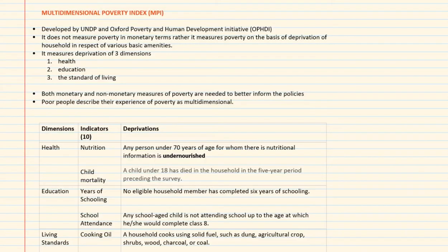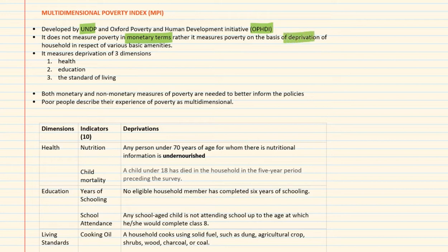In this lecture we will study the Multidimensional Poverty Index. It is developed by the United Nations Development Programme and Oxford Poverty and Human Development Initiative. It does not measure poverty in monetary terms; rather it measures poverty on the basis of deprivations of households in respect of various basic amenities.